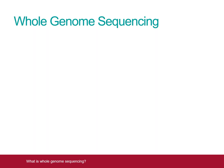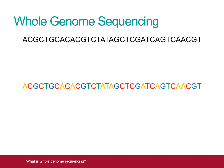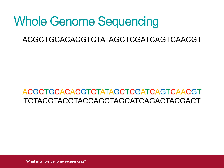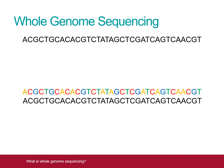Bacterial species are defined by their genome — the unique sequence of DNA that forms the recipe book and instruction manual for everything that the bacterial cell makes and does. Whole genome sequencing involves identifying the entirety of this DNA sequence, then comparing it to an extensive database of reference genomes. By doing this, we can accurately identify the species to which the sequence belongs.